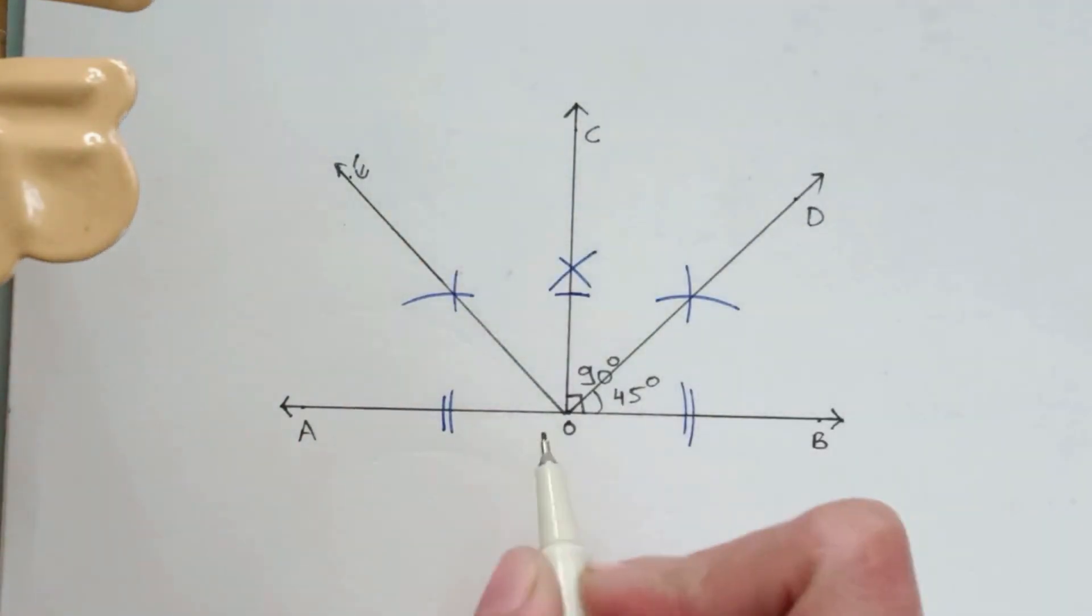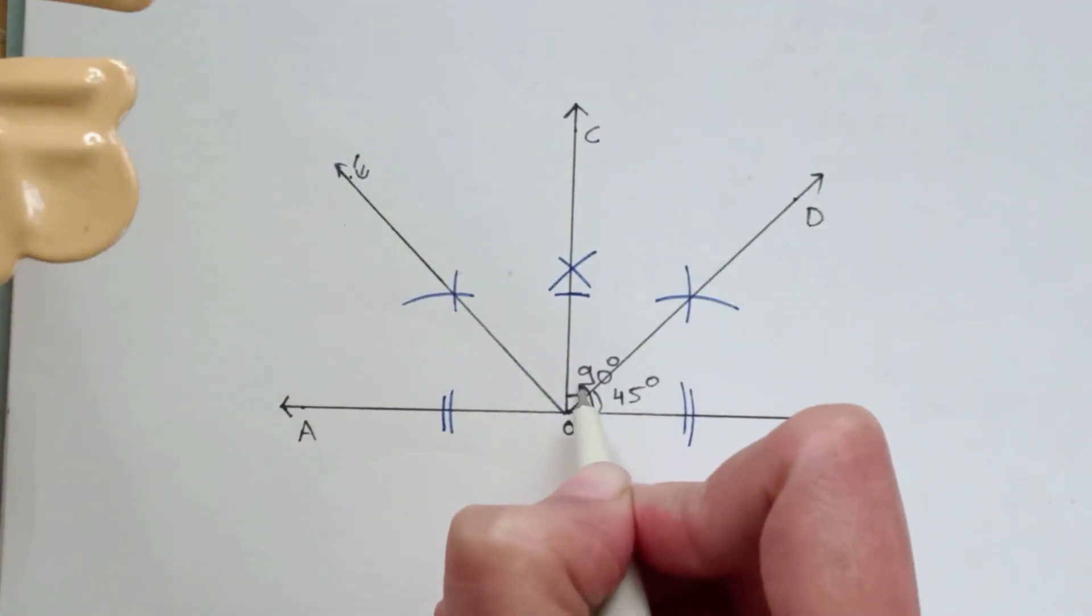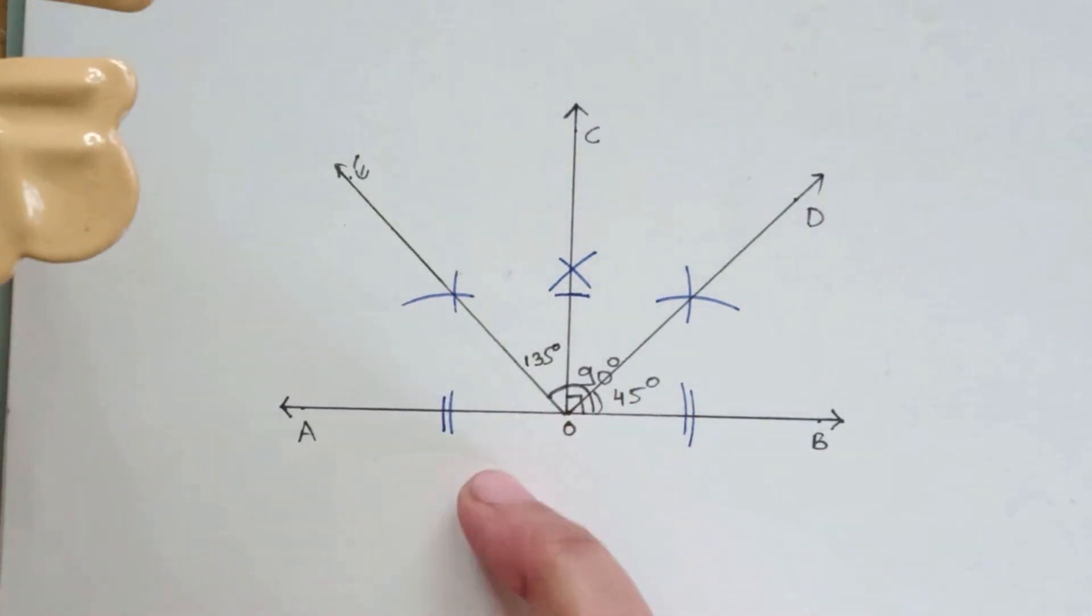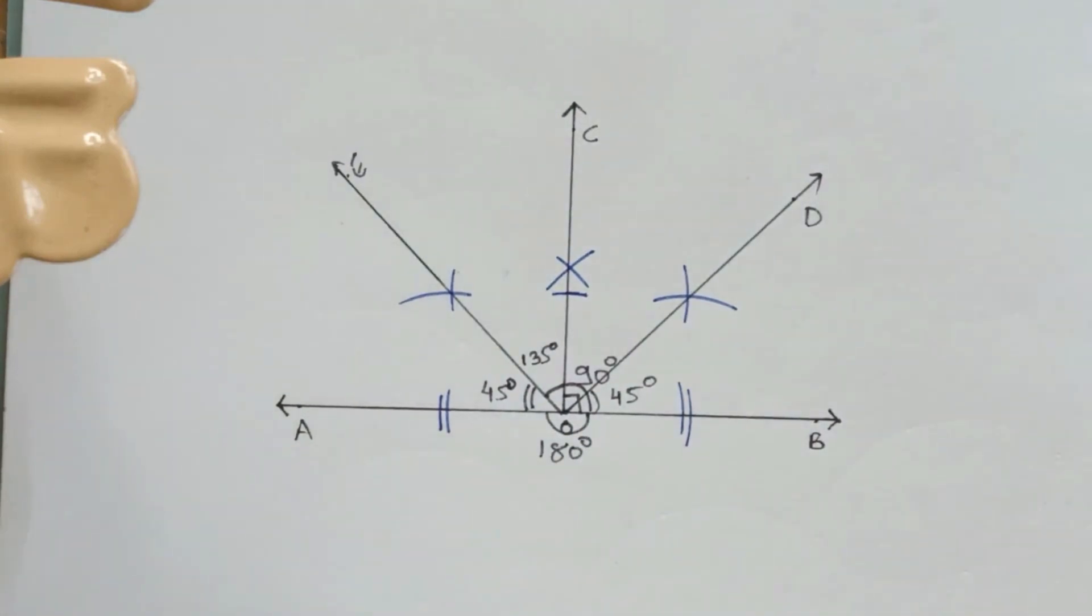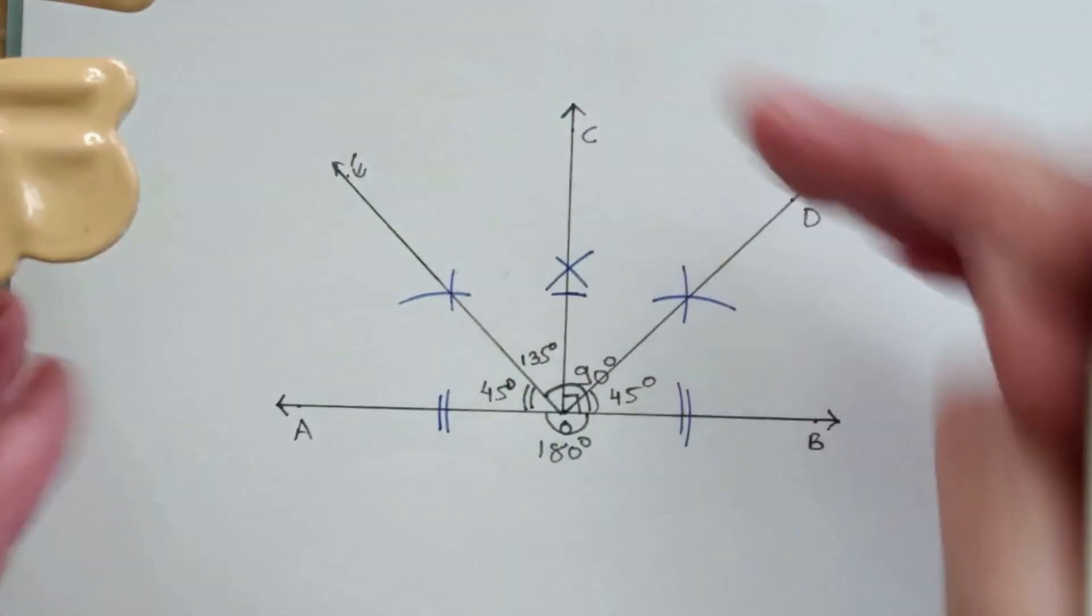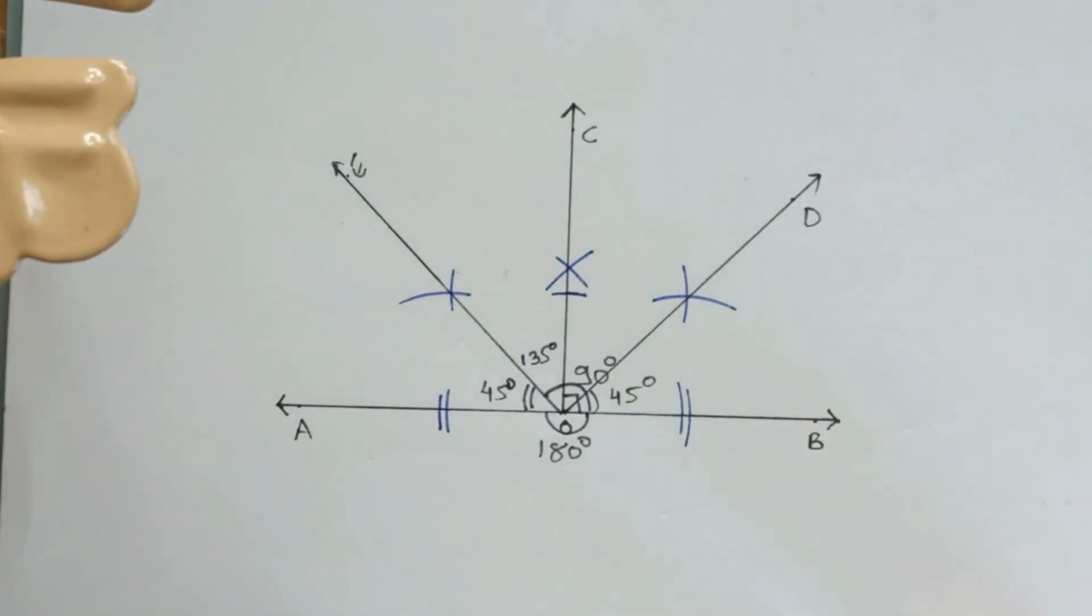Let's call it OE, and this new angle that we got will be a 135 degree angle. And this angle that is left will be again a 45 degrees angle from OA, and this entire angle will be 180 degrees. So this is how we draw 45 degree angle, 90 degree angle, 135 degree angle, and finally the 180 degree angle.